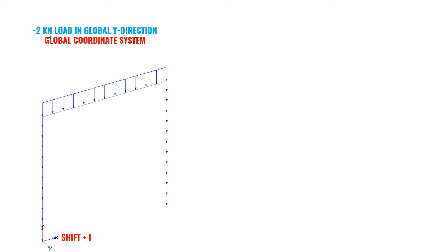And see what happens when I apply 2kN load in global y-direction. Look at the axis below. Here you can see the x-axis, y-axis, z-axis. If you want to see your global axis, you need to press shift plus i on your keyboard. And here you can see the y-axis is going upwards. That is the reason I have given minus 2kN load.